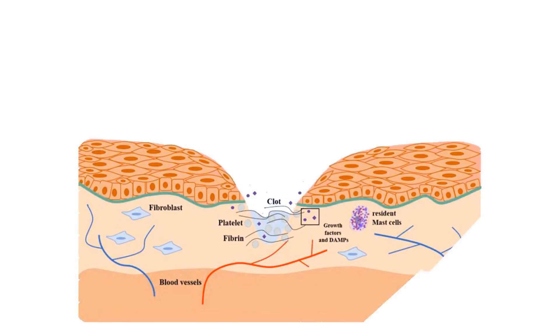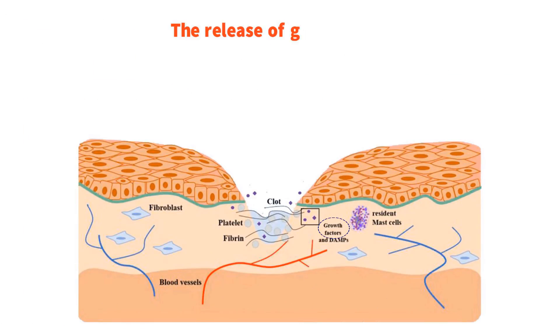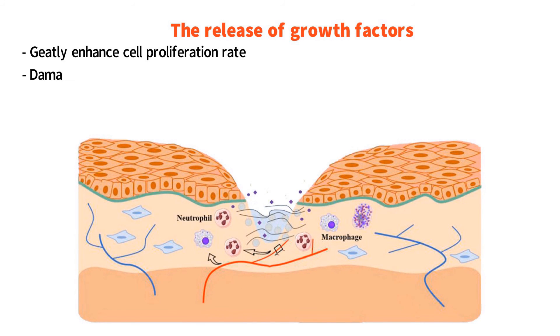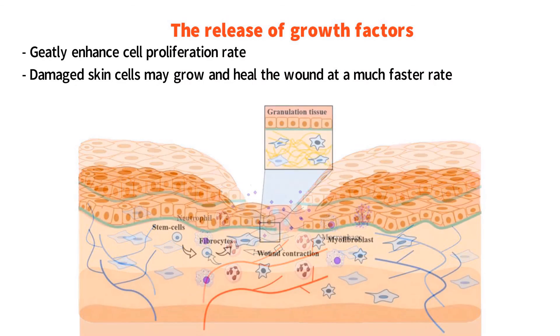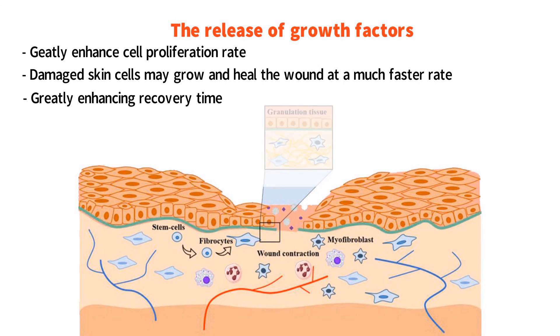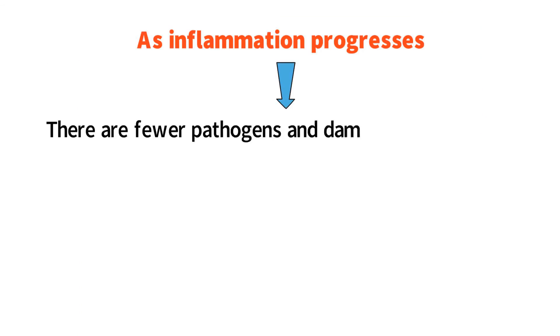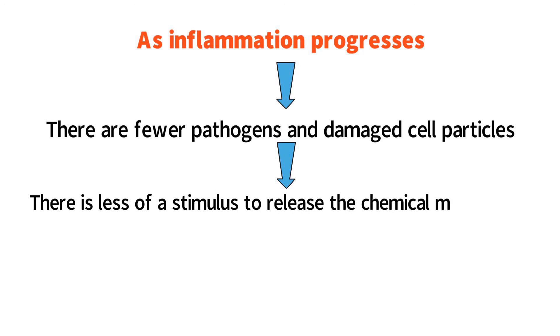An additional response during inflammation is the release of growth factors that greatly enhance cell proliferation rate, so that damaged skin cells may grow and heal the wound at a much faster rate, greatly enhancing recovery time. As the wound heals, there are fewer and fewer damaged cell particles available to signal the release of these growth factors. Therefore, as inflammation progresses and there are fewer pathogens and damaged cell particles, there is less and less stimulus to release the chemical messengers signaling for inflammation to continue.